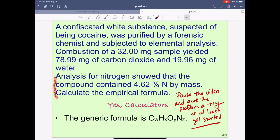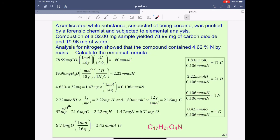Further, this problem is complicated because cocaine has nitrogen in it. So in order to know about the moles of nitrogen in the chemical formula, we need some more information. And so we're told that this compound has 4.62% nitrogen by mass.